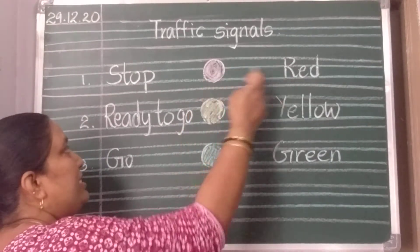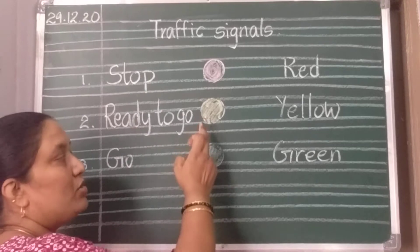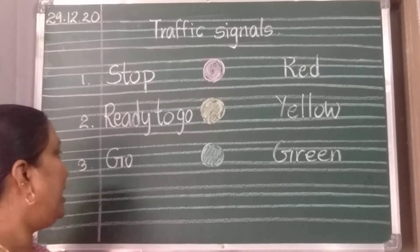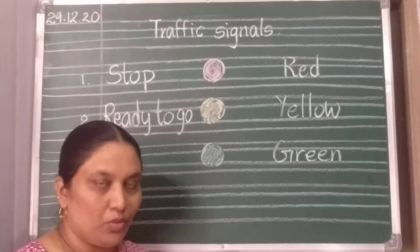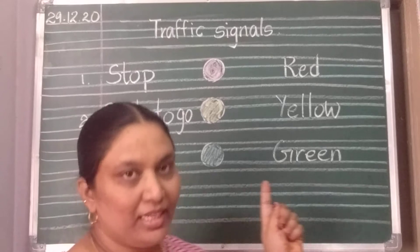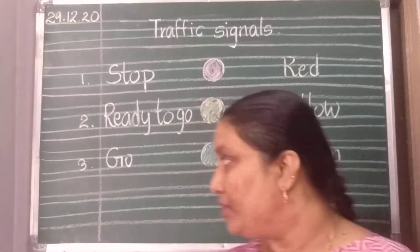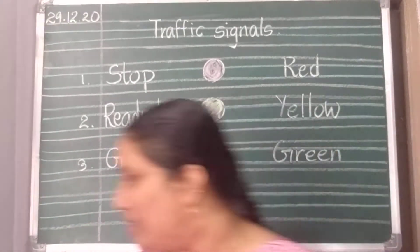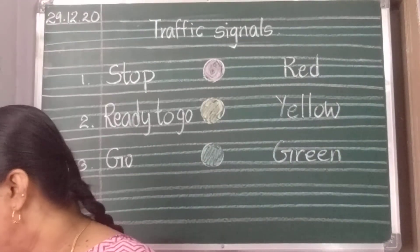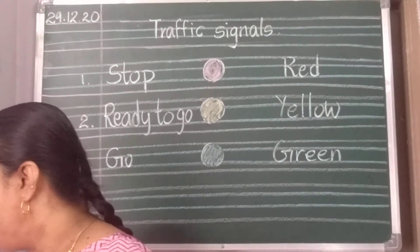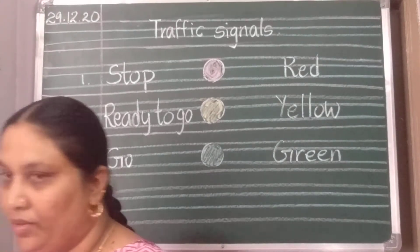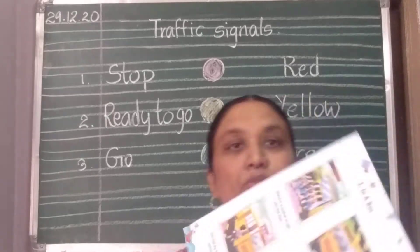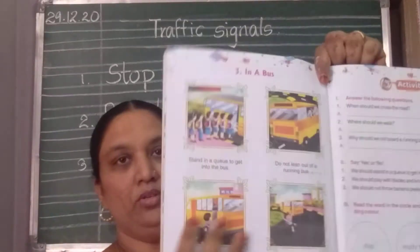Red says stop, yellow says ready to go, and green says go. After doing this activity in the notebook, you should write question and answer — not in the practice book, but in your course book.